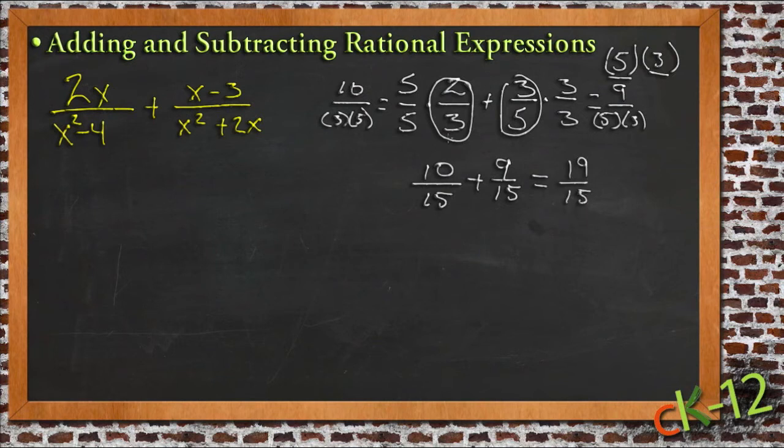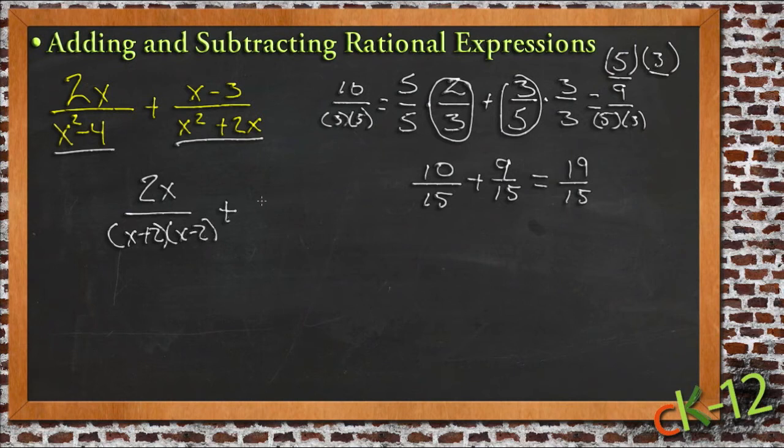So I'm going to follow exactly the same process here using our rational expressions. If we first factor our two denominators, this was the difference of squares, and this one shares an x, then I get 2x over (x+2)(x-2), and I'm going to add that to (x-3) over x(x+2). So all I did was just factor those.